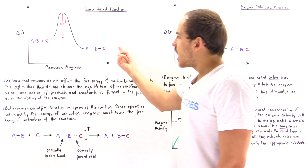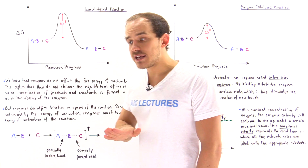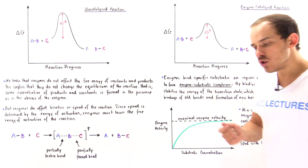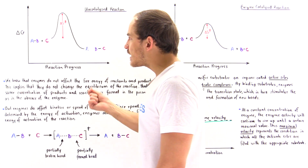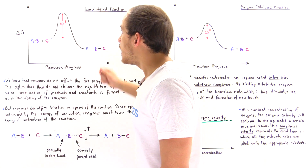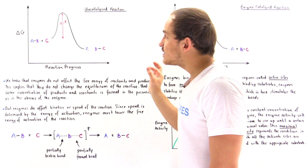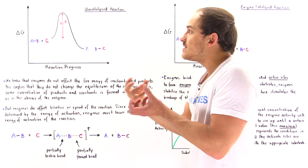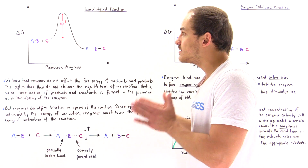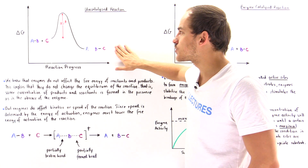If the thermodynamics of the products and reactants is not changed by an enzyme, what is actually changed? Recall that the kinetics of the chemical reaction is determined by the energy of the transition state — the transient stage that exists between the reactants and our products.